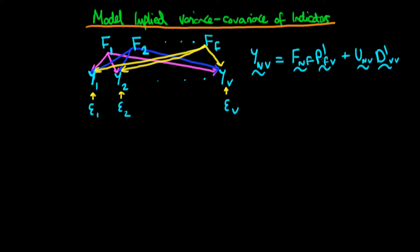times p primed fv, which is the transpose of the weightings matrix, plus then we have a matrix u, which is our matrix of unique factor scores, times the weightings on those specific unique factors. So that's just the model written out in its complete matrix notation form, which we've seen before.